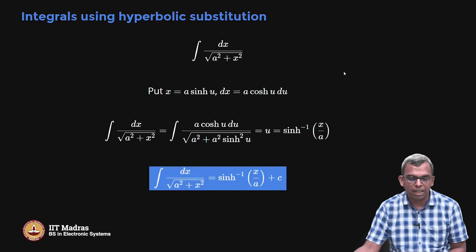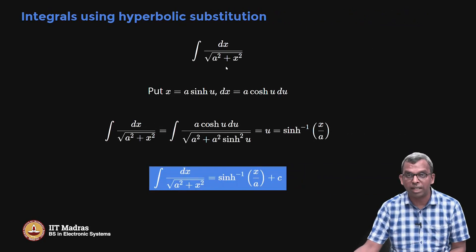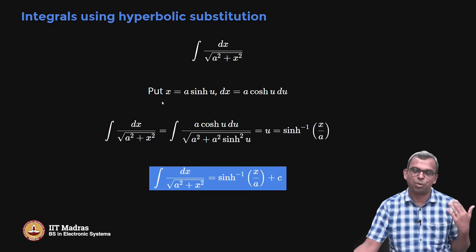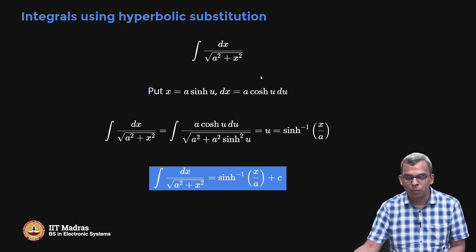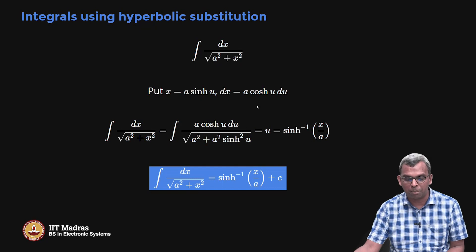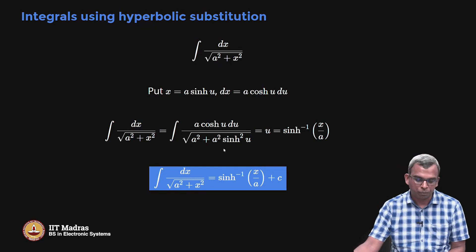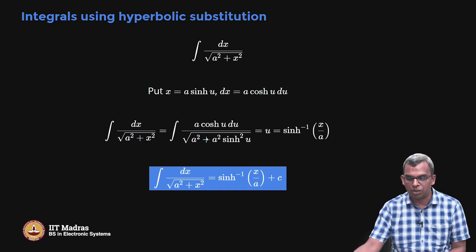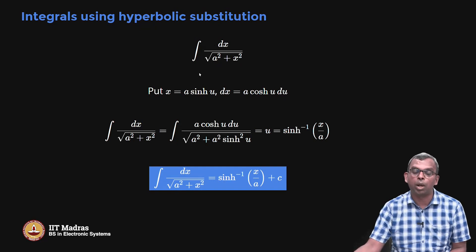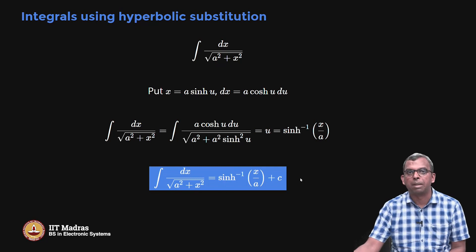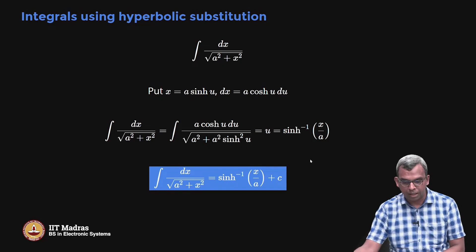Likewise, there is a hyperbolic substitution. For 1/√(a²+x²), you put x = a sinh(u). Since cosh²(u) - sinh²(u) = 1, we have √(1 + sinh²(u)) = cosh(u), and after the same process, you get u = sinh⁻¹(x/a). So the antiderivative of 1/√(a²+x²) is sinh⁻¹(x/a) + C.